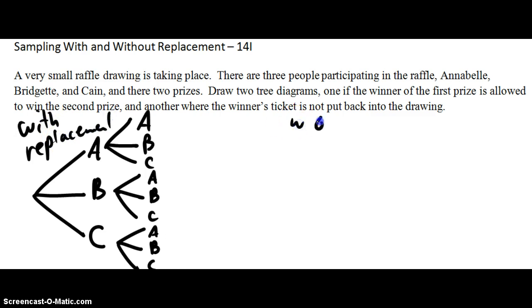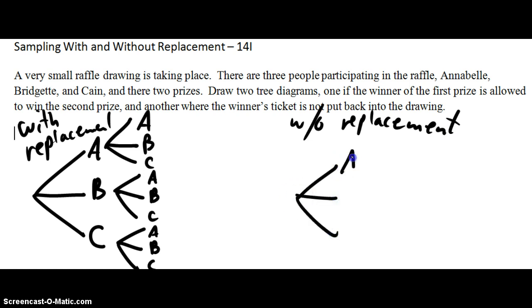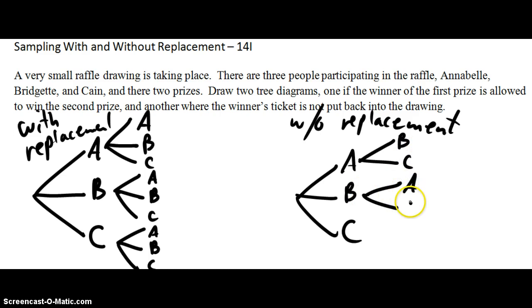Without replacement, you can't have one person win both times. So first, we still have Annabelle, Bridget, and Kane, but if Annabelle gets it, there's only two options — Bridget and Kane. If Bridget gets it, there's only two options — Annabelle and Kane. And if Kane gets it, there's only two options — Annabelle and Bridget. So you notice the list of possibilities with replacement is greater than the list of possibilities without replacement. That's with and without replacement.